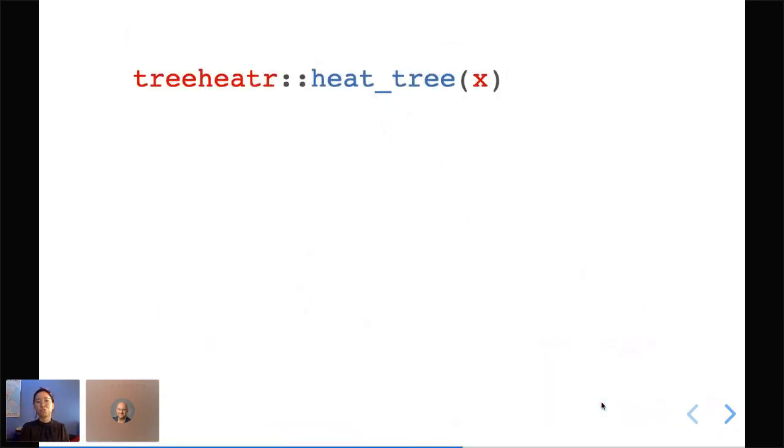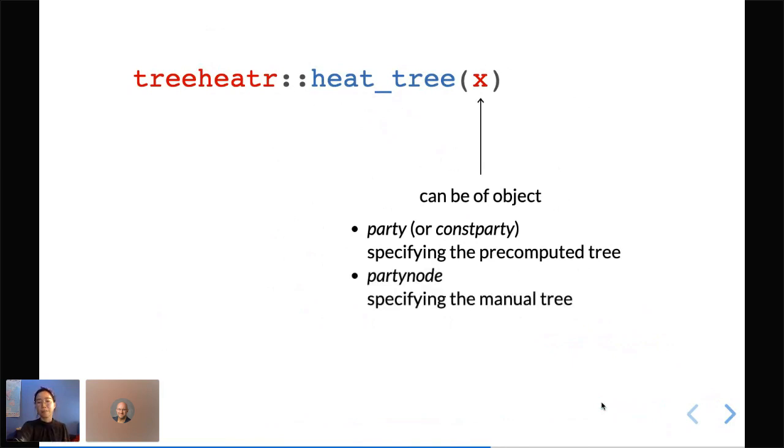The core function of treeheatr is called heat_tree. The main argument can be an object of party or trans party. What that means is you compute your tree using the partykit package, or you can use rpart to compute the tree and then convert it into the party object using as.party. You can also use partynode to define your manual tree. Or you can just feed in the data frame. In that case, you would need to supply a target label so that treeheatr can automatically compute the conditional tree for you, predicting that particular target outcome.